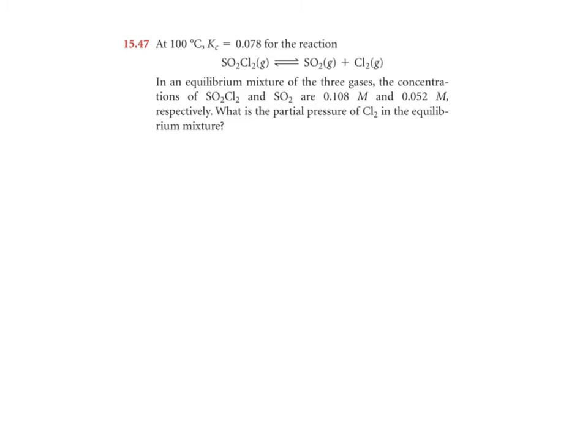So we're already at equilibrium, because it says in an equilibrium mixture, so we know we're already there. So we don't have to do an ice chart, because we don't have initial values. We only have equilibrium values. So we can go right to our equilibrium expression, equation, where we have SO2 times Cl2 over SO2Cl2.